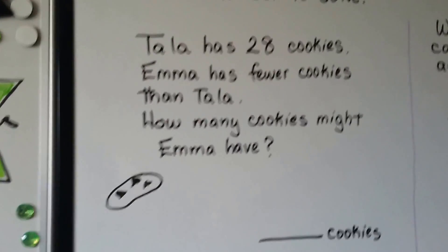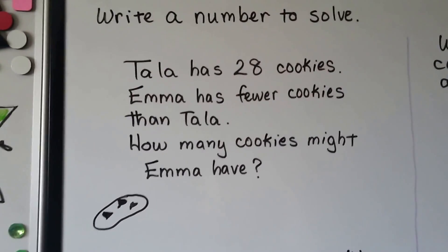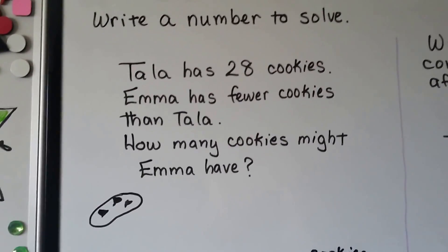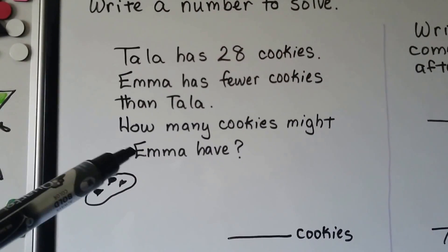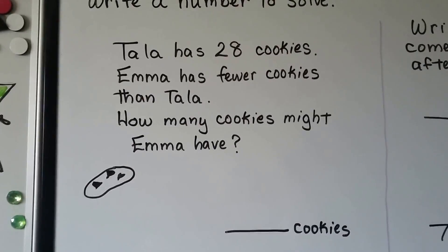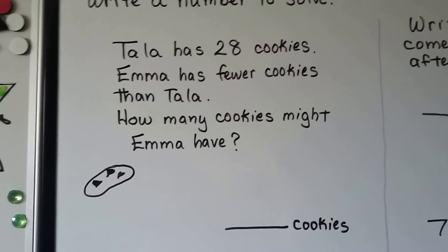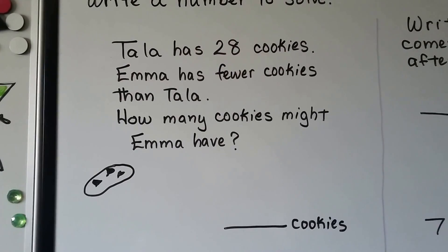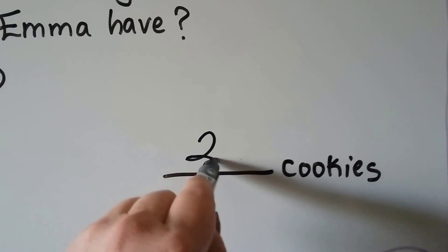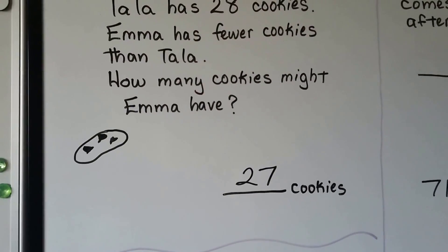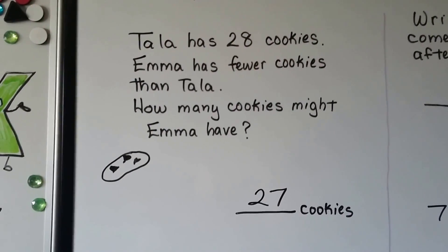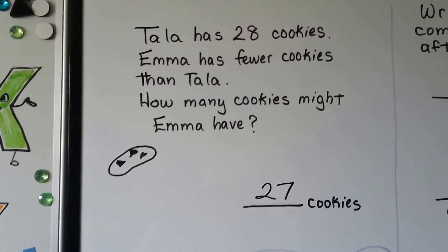We can write a number to solve. Tala has twenty-eight cookies. Emma has fewer cookies than Tala. How many cookies might Emma have? We just need a number smaller than twenty-eight. Any number smaller than twenty-eight would make this true — twenty-seven, twenty-six, twenty-five, all the way down to one cookie, because that would be less than twenty-eight.